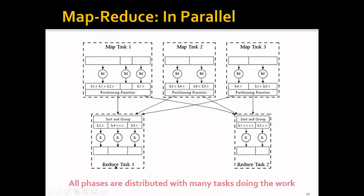If you look more closely at a reduce task, after it collects the results from the map tasks, it will first sort and group all these key-value pairs. All key-value pairs with the same key become a key and a list of values. Then it performs the reduce function to reduce this grouped key-value pair into a final key-value pair. So all the phases are actually distributed, with many tasks doing the work.